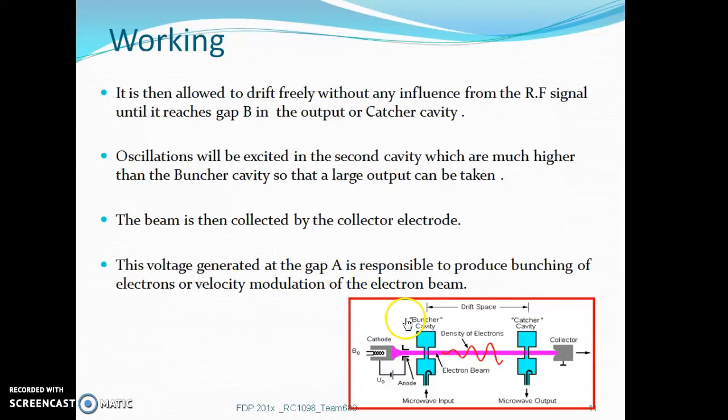This voltage generated at gap A is responsible to produce the bunching of electrons or velocity modulation of the electron beam.